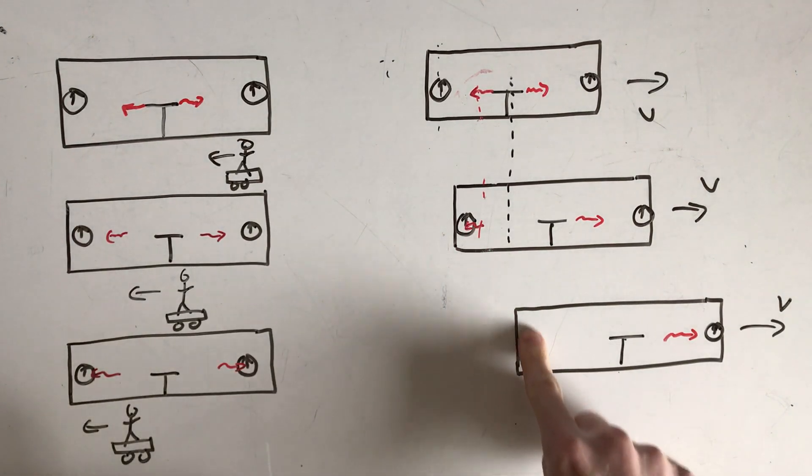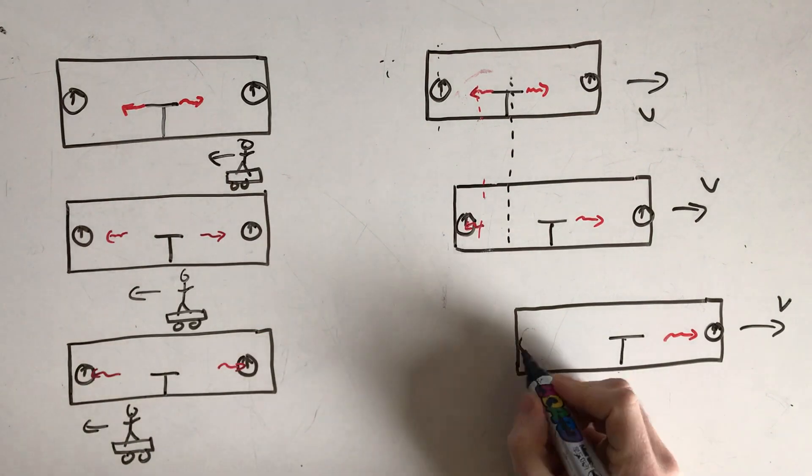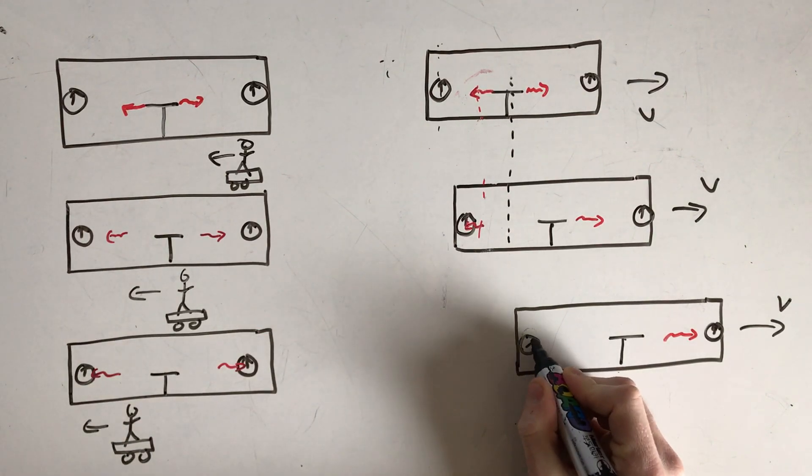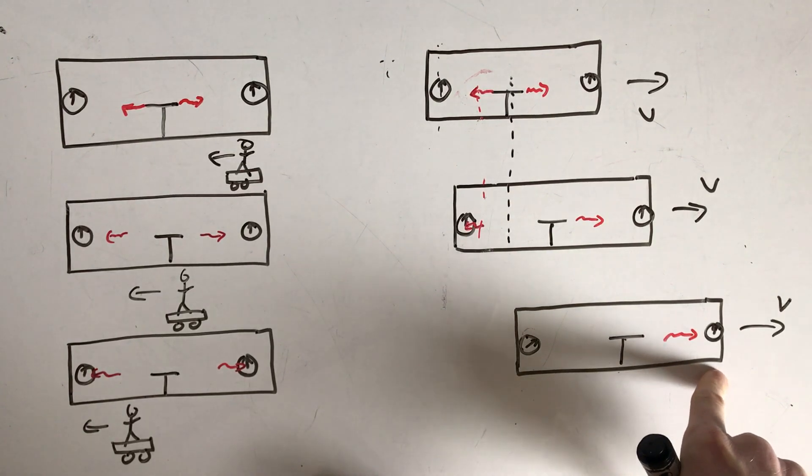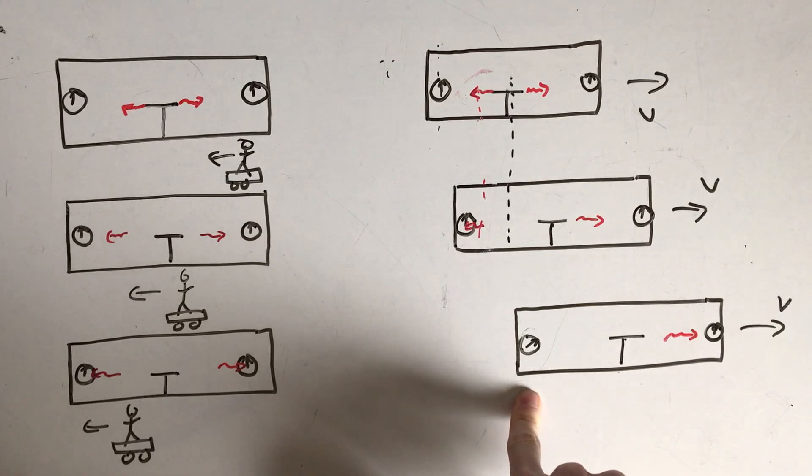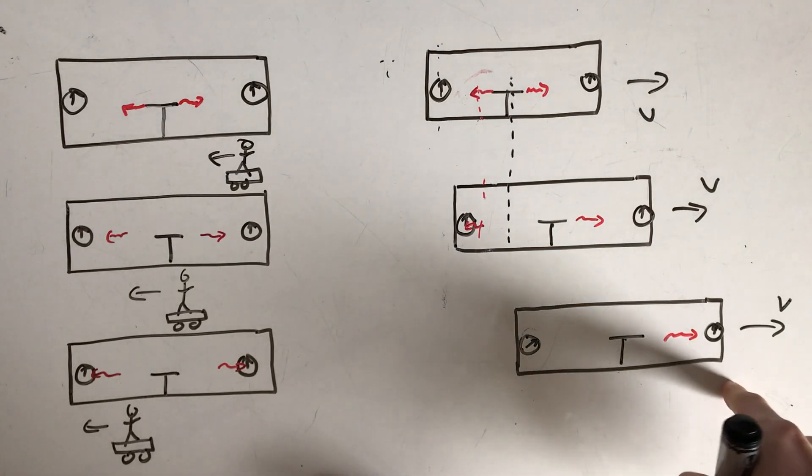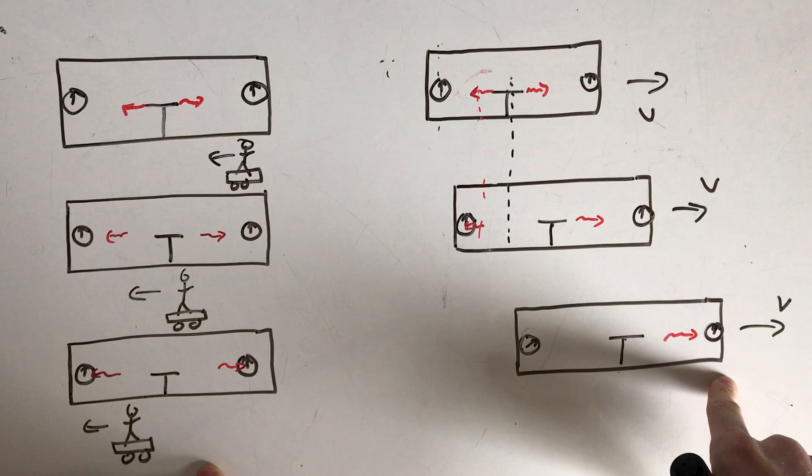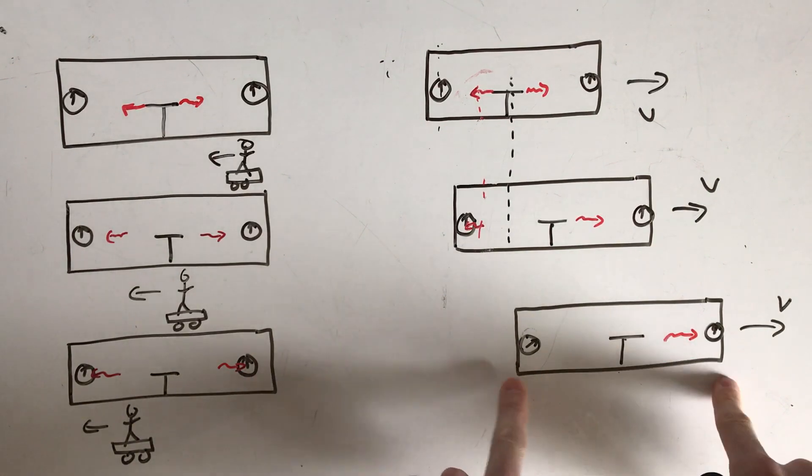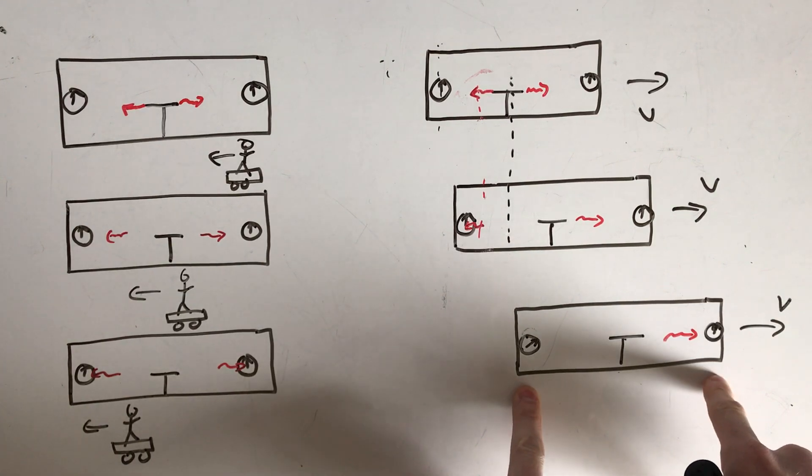So what that means is this clock here will actually have started ticking before this clock receives the pulse. So what that means here is that this clock is actually going to be running ahead of schedule compared to this clock. And these two clocks will not actually be synchronized according to that skateboarder. That skateboarder actually sees the clocks ticking out of sync with each other. This clock will be ahead of time compared to this one.